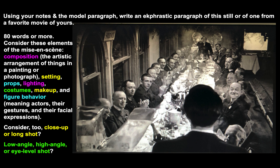Now I'm going to show you another still. This one is taken from Citizen Kane, a 1942 film by Orson Welles — directing and acting in it; he's the star. He is Kane, Citizen Kane. We see his back toward us in the foreground. Without getting into the movie itself, try your hand at writing an ekphrasis of this still, or of any other still you'd care to write about in any movie. The minimum is 80 words or more. Consider these elements of the mise-en-scène.